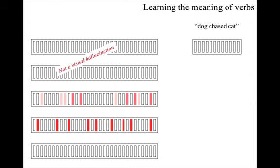But let me point out a problem with the description so far. It's not clear in this model how 'dog chased cat' would be distinguished from 'cat chased dog'. And resolving this problem requires the rather more complex cortical model I mentioned earlier. But at this point, I'll just mention the problem can be resolved and continue a bit further with the simple model.